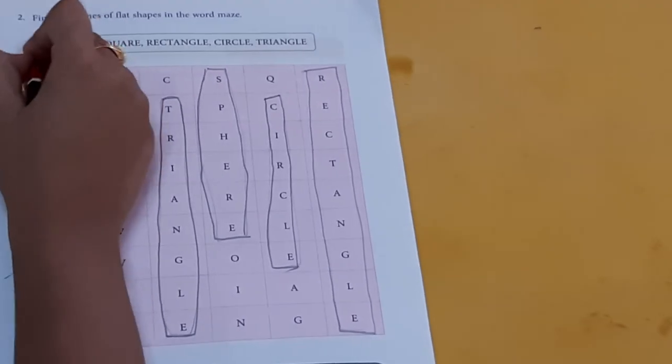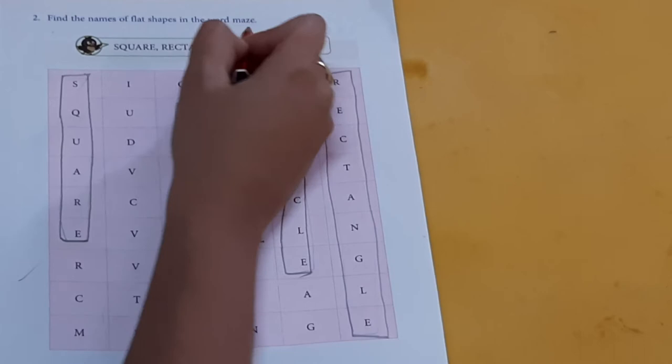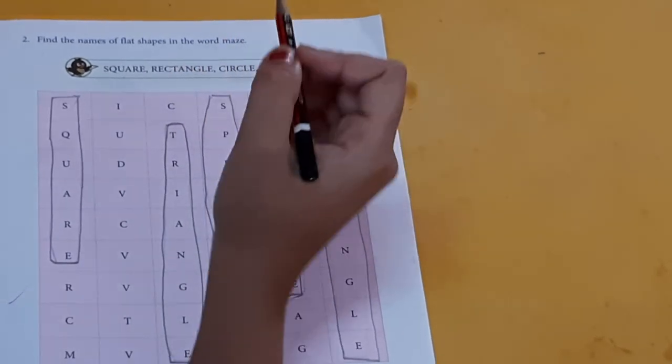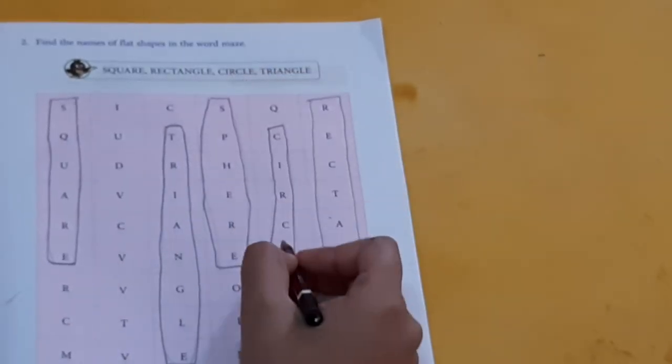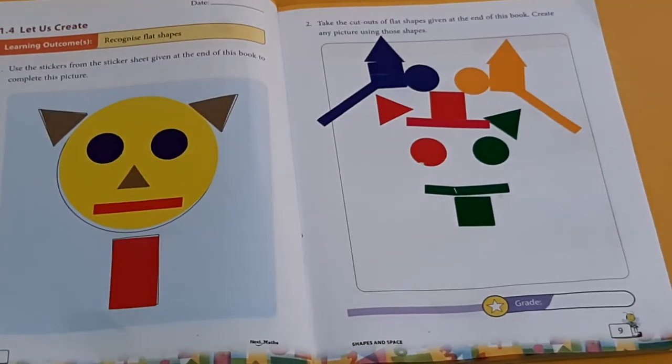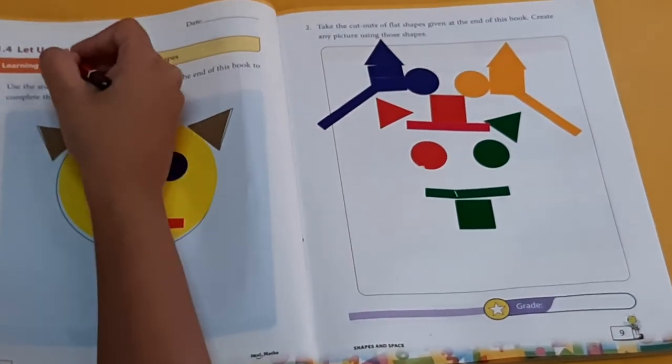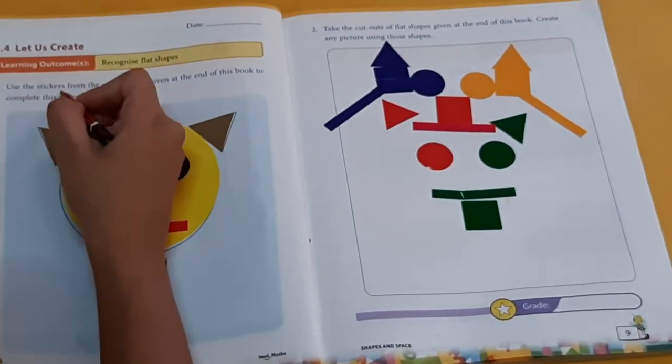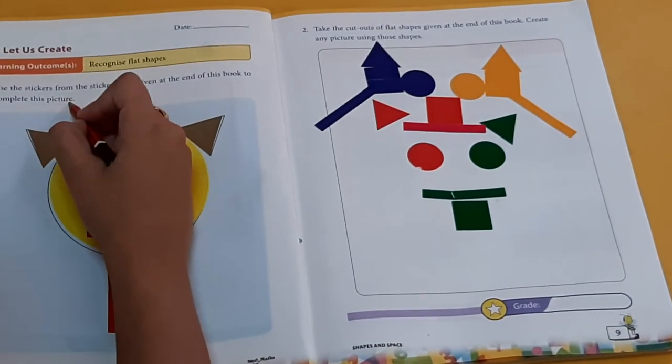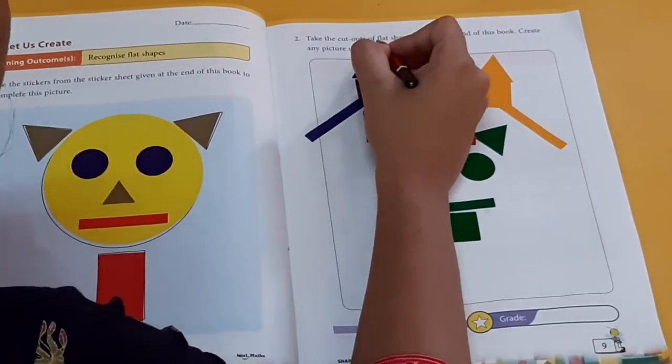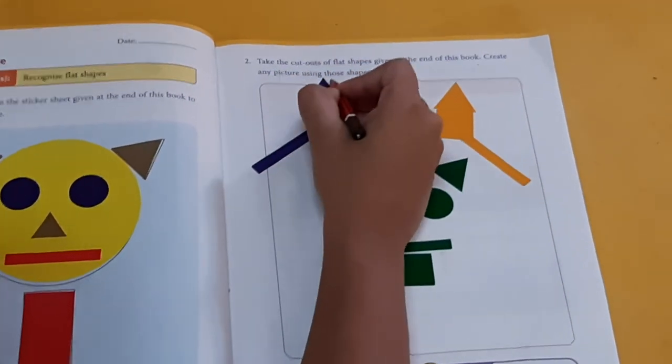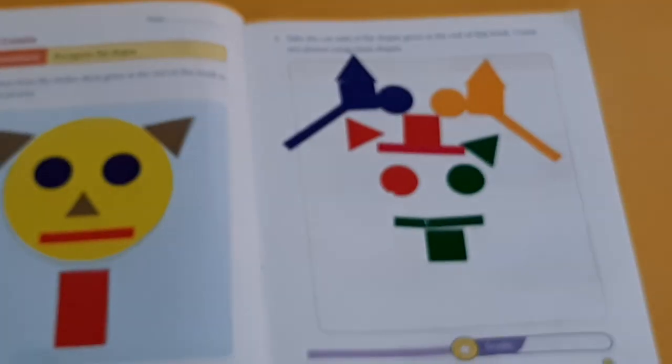One point four. Let us create. First question. Use the stickers from the sticker sheet given at the end of this book to complete the picture. Second one. Take the cutouts of flat shapes given at the end of this book. Create any picture using those shapes. I have already done it for you children.